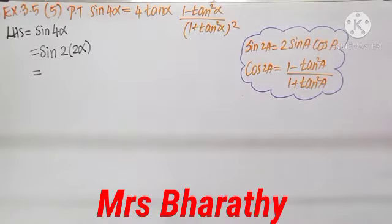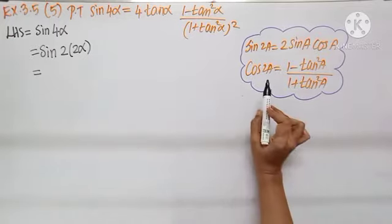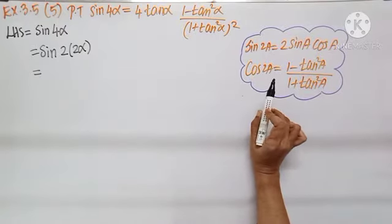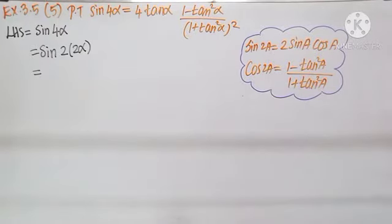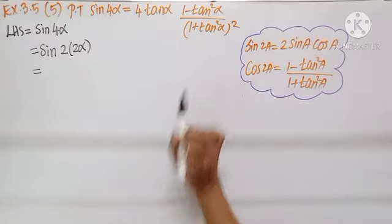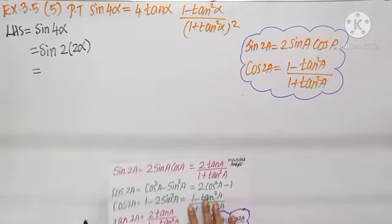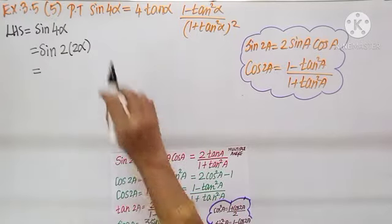Good morning children. In today's class we are proceeding to do problems from Exercise 3.5 based on multiple angles 2a, 3a with sine, cos and tan. Question number 5: prove that sin 4α equals 4 tan α into 1 minus tan² α by 1 plus tan² α, the whole square. As I see the LHS, sin 4α.